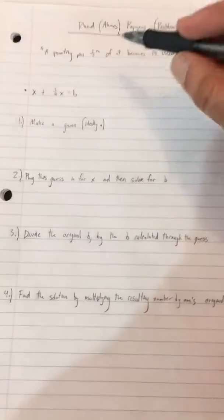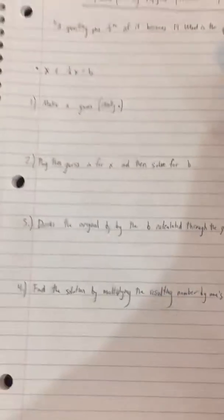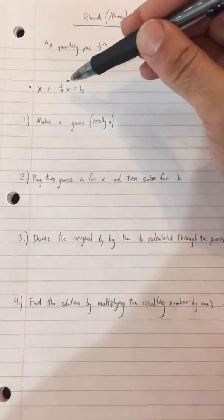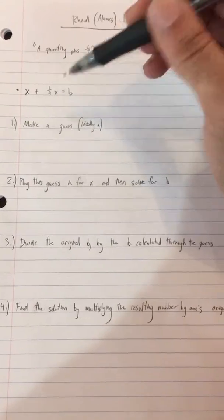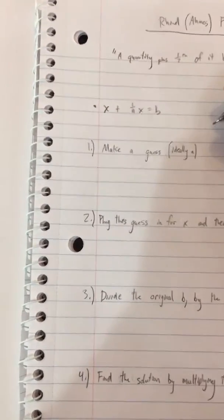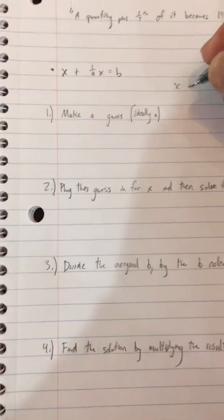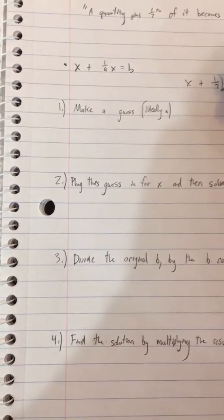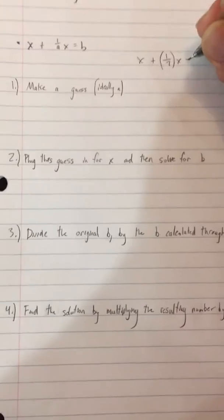And so this question, a quantity plus 1/7th of it becomes 19, what is the quantity? That can be expressed as x plus 1 over a times x equals b. And for this specific example, we would write this in the form of x plus 1/7th x equals b.